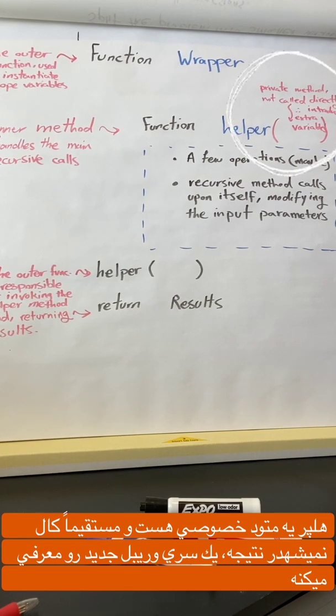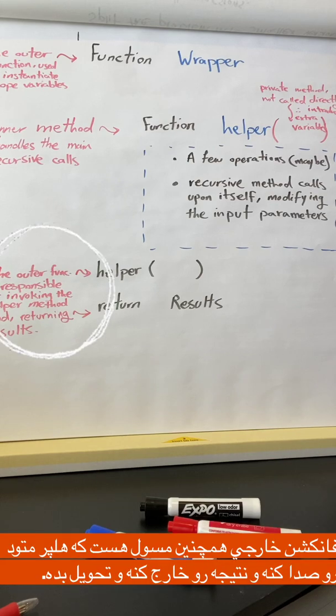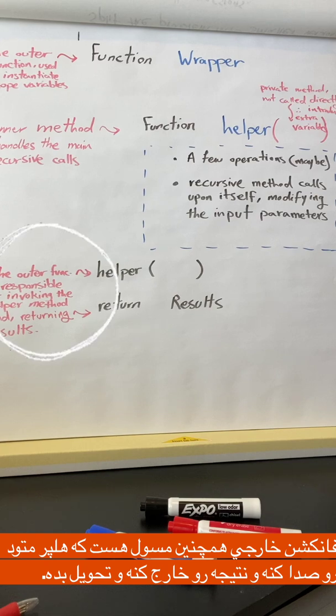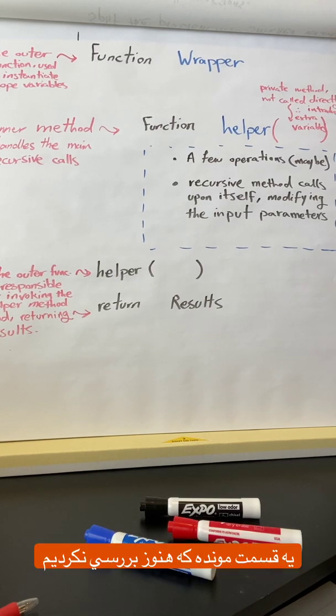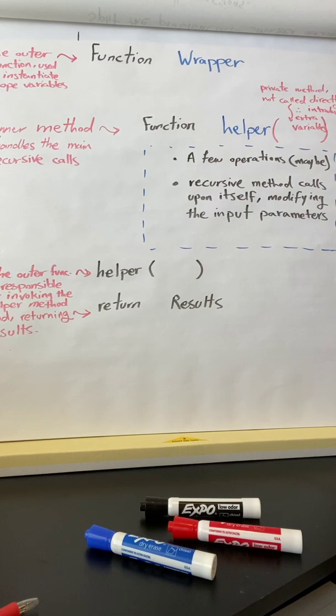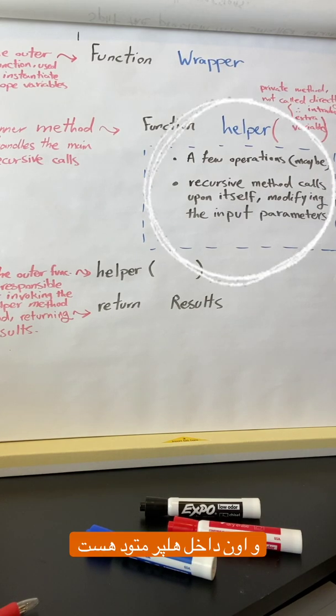Therefore it introduces extra variables. The outer function is also responsible for invoking the helper method. It is also responsible for returning results. So there's one last piece of this puzzle that we still haven't covered, and that's what happens inside of the helper method.